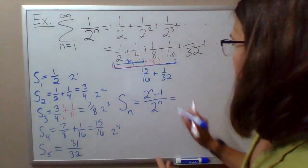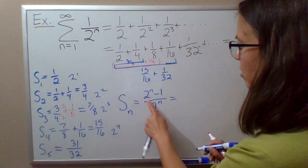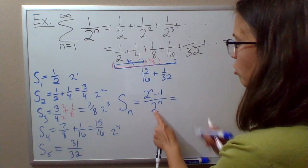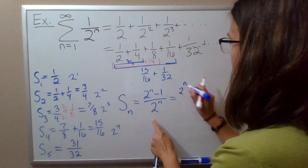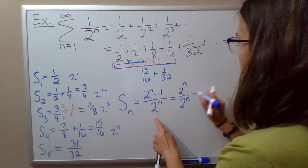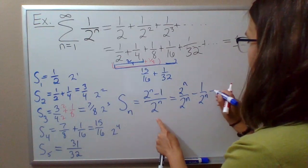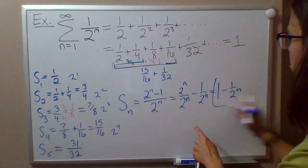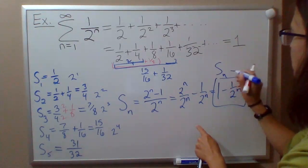Maybe a simpler way to write this is, if we split up the numerator: 2 to the n over 2 to the n minus 1 over 2 to the n, so that's 1 minus 1 over 2 to the n. This is your formula for the nth partial sum.